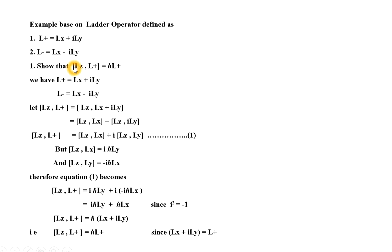First, show that the commutator bracket LZ comma L plus is equal to H-cross times L plus. Let us solve this example using the definition of ladder operator. We have L plus equal to LX plus iLY and L minus equal to LX minus iLY. Let us consider the right-hand side of the equation. The commutator bracket LZ comma L plus is equal to LZ comma LX plus iLY.